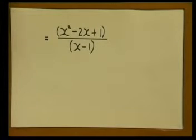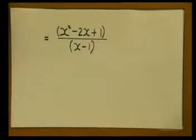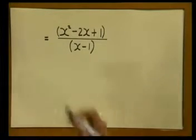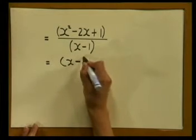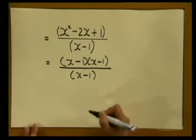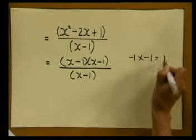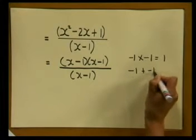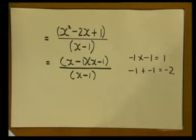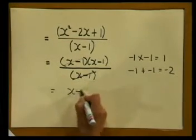But is this fraction in its simplest form? No — the trinomial x squared minus 2x plus 1 in the numerator can still be factorized. Using our method: minus 1 times minus 1 gives positive 1, and minus 1 plus minus 1 gives minus 2, confirming the factorization is x minus 1 times x minus 1. Dividing by x minus 1, the common factor x minus 1 cancels, and the final answer is x minus 1.